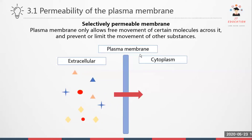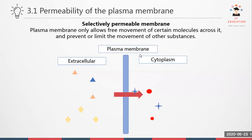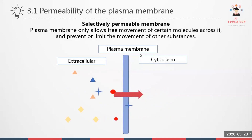Next is the characteristic of the plasma membrane, which is the selectively permeable membrane. The plasma membrane only allows free movement of certain molecules across it and prevents or limits the movement of other substances. Just like this diagram — we can see that only the star shape and the red dot are able to move across the plasma membrane. This is what it means by selectively permeable membrane.